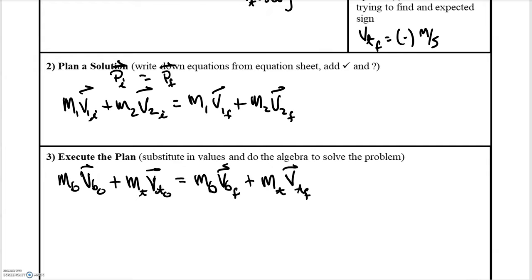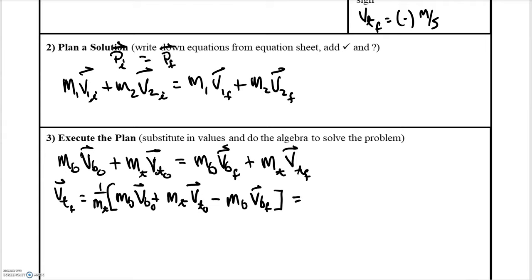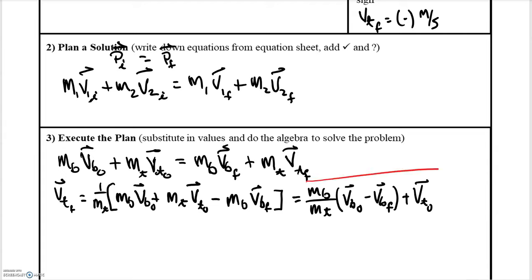Separating out and solving for v_tf, we get: v_tf = (m_b / m_t) × (v_b0 − v_bf) + v_t0. I'm going to box this expression because we'll use this same equation in the next problem.